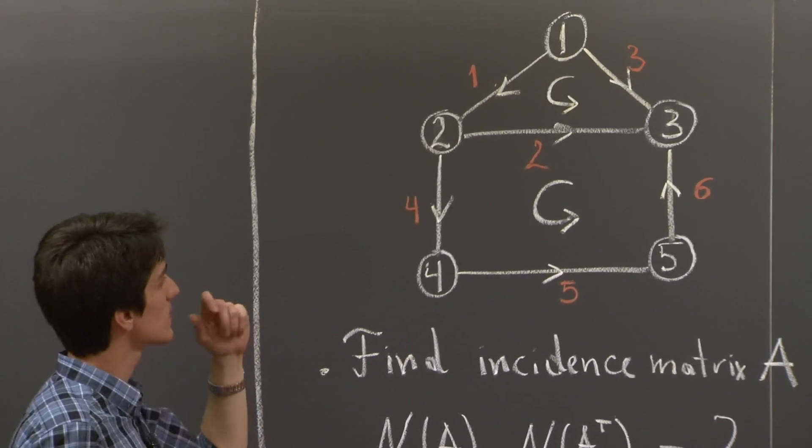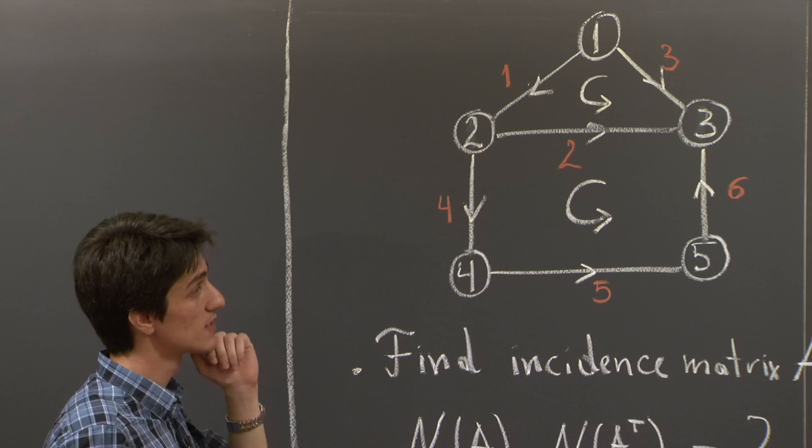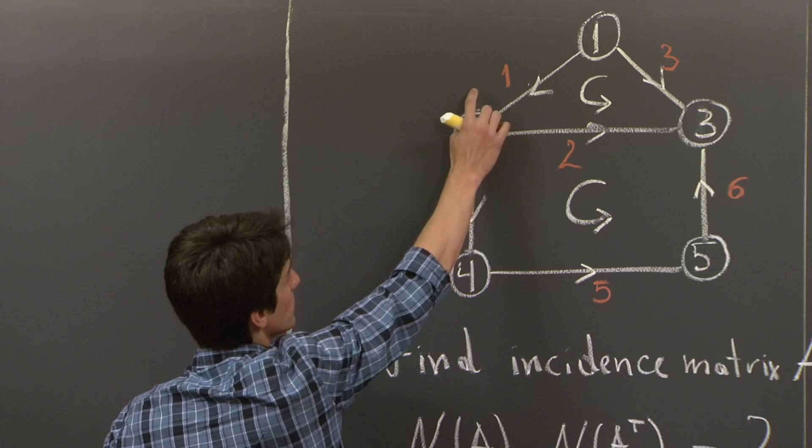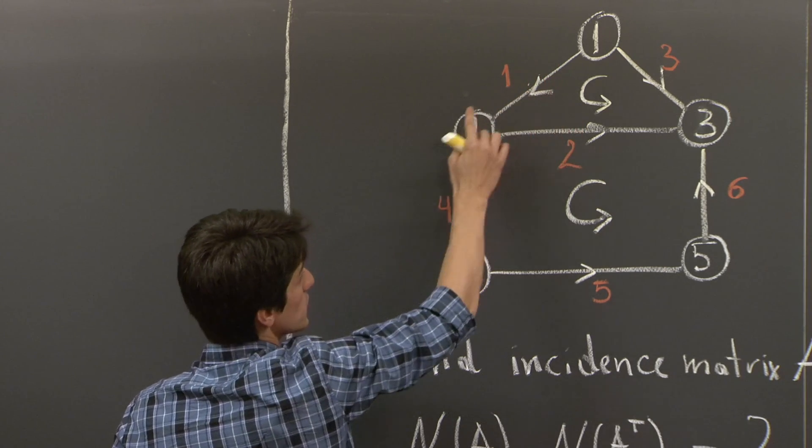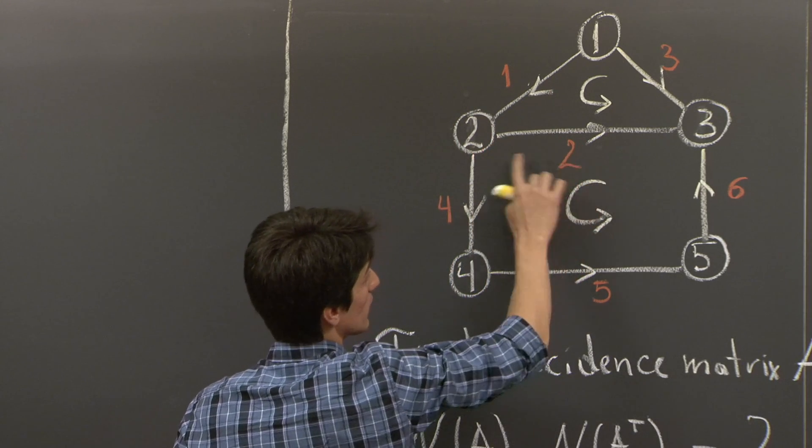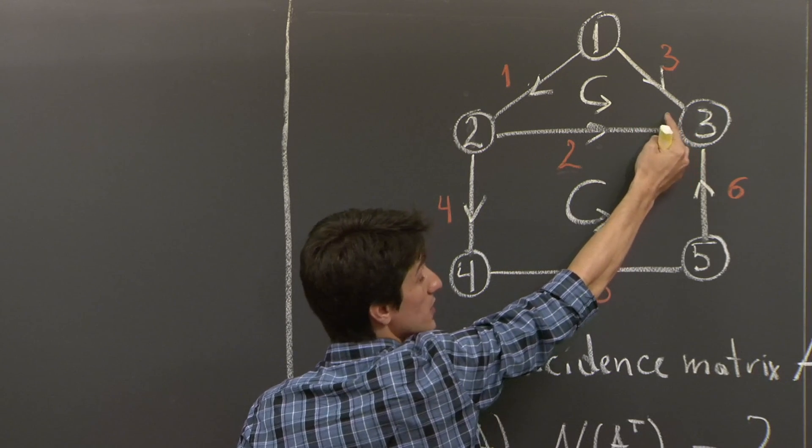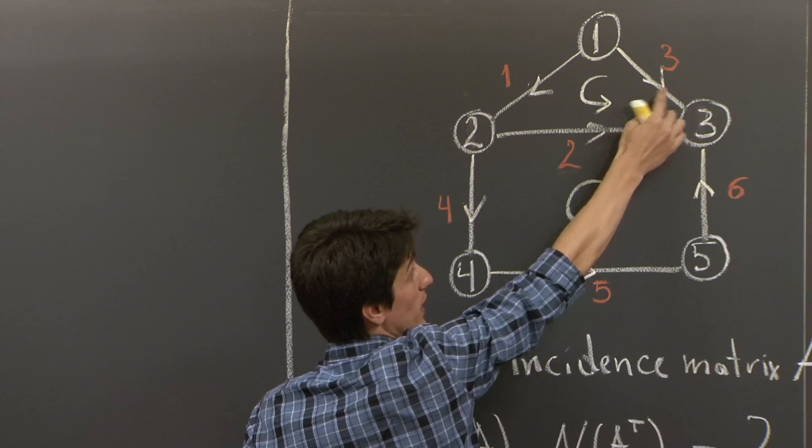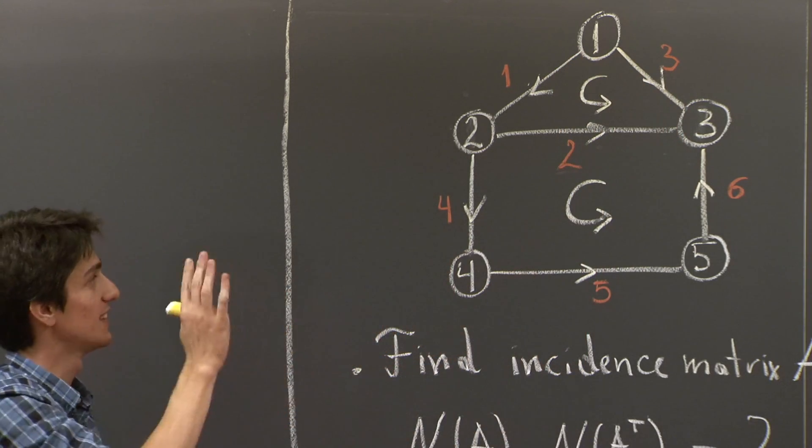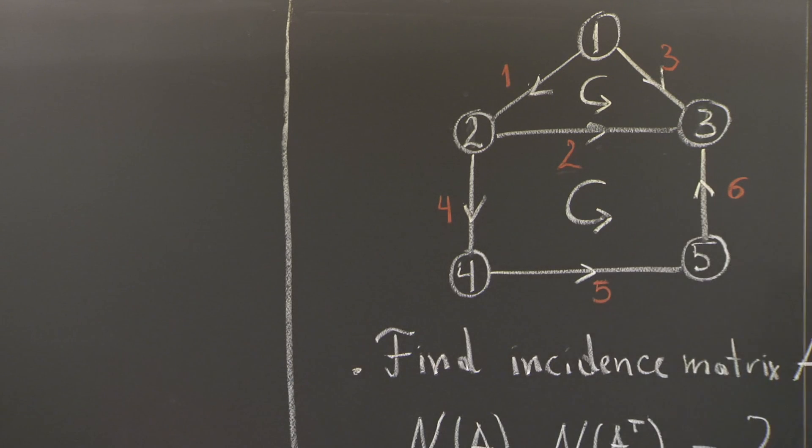So, let's figure out the configuration of currents that balance these loops. So if we flow a current 1 from 1 to 2, and then flow a current of 1 along edge 2 from 2 to 3, and then we flow a current of negative 1, mind that the direction is opposite to the direction of the loop, then we're going to have a balanced configuration of currents.